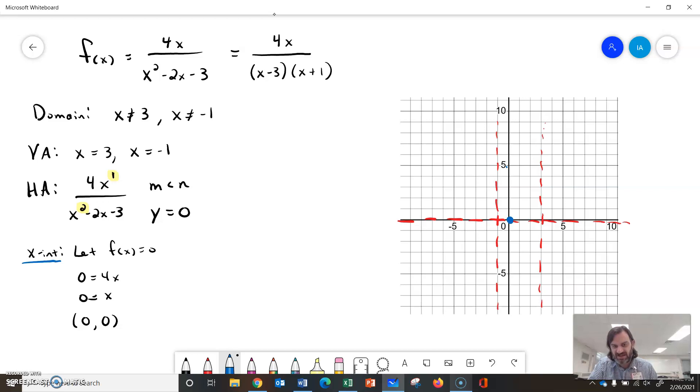I only cross the x-axis once, so to the left of -1, everything is either on top or bottom because I can't cross the x-axis. Let's make a little chart.